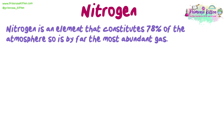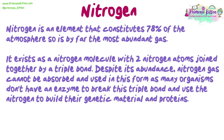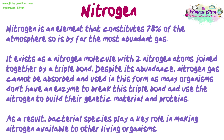Nitrogen is an element that constitutes 78% of the atmosphere, so is by far the most abundant gas. It exists as a nitrogen molecule with two nitrogen atoms joined together by a triple bond. Despite its abundance, nitrogen gas cannot be absorbed and used in this form, as many organisms don't have an enzyme to break this triple bond and use the nitrogen to build their genetic material and proteins. As a result, bacterial species play a key role in making nitrogen available to other living organisms.